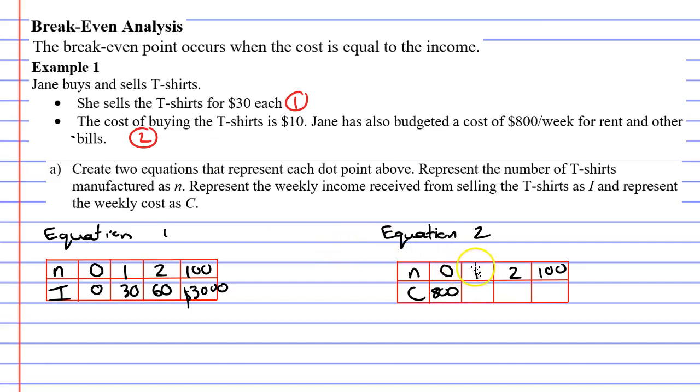If I only make one t-shirt, that's only $10. But I've got to add on the $800 in expenses as well. So we go to $810, then $820. And finally, if I sell a hundred t-shirts at a cost of $10 each, that's $1,000 plus the $800 in rent and bills. So that comes out to $1,800 in costs if I sell a hundred t-shirts.